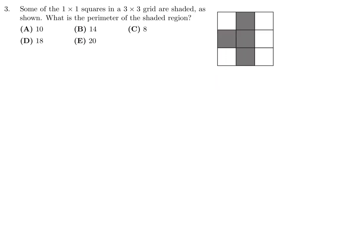Some of the 1 by 1 squares in a 3 by 3 grid are shaded as shown. What is the perimeter of the shaded region? Okay, well, let's count: 1, 2, 3, 4, 5, 6, 7, 8, 9, 10. And each of those had a length of 1. So, number 3, the answer is A.